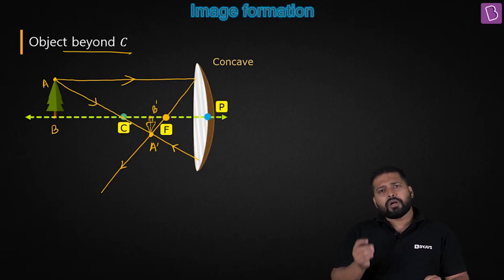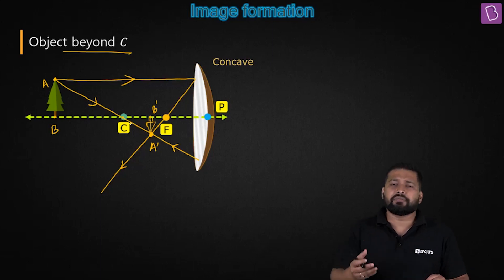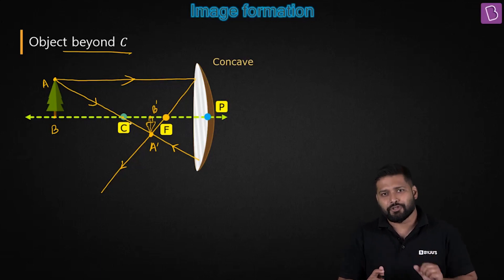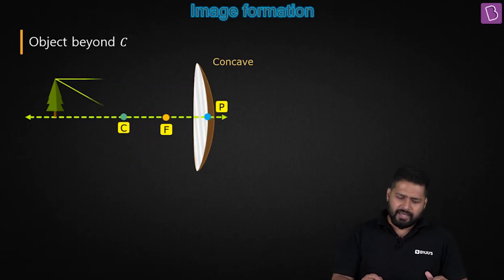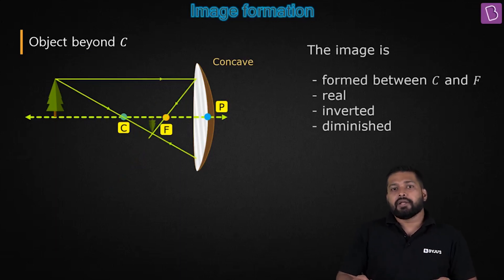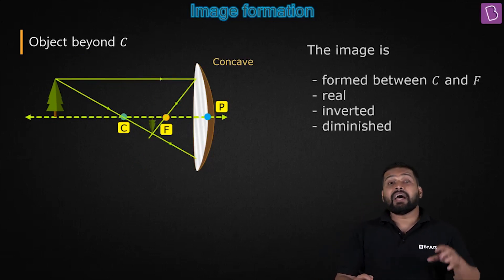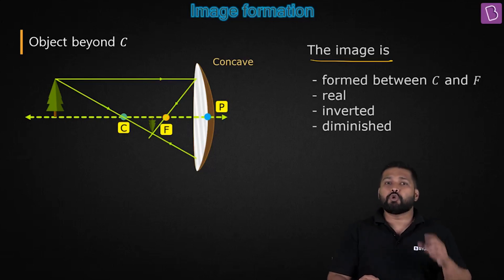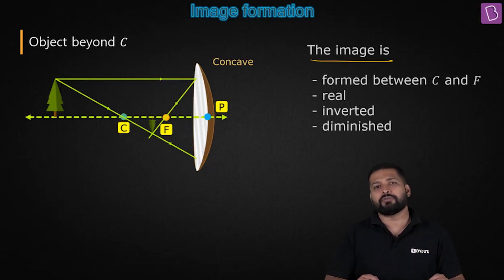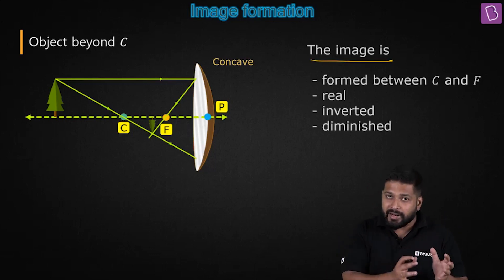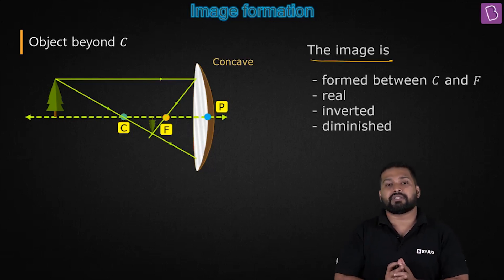What about the size? Is it magnified, the same size, or diminished? You can see the size of the image is small, so it is diminished. Once we know all these characteristics, we can state them. We can draw the ray diagram and write down the characteristics. When you're drawing the ray diagram, always write down the characteristics of the image formed — that's very important.